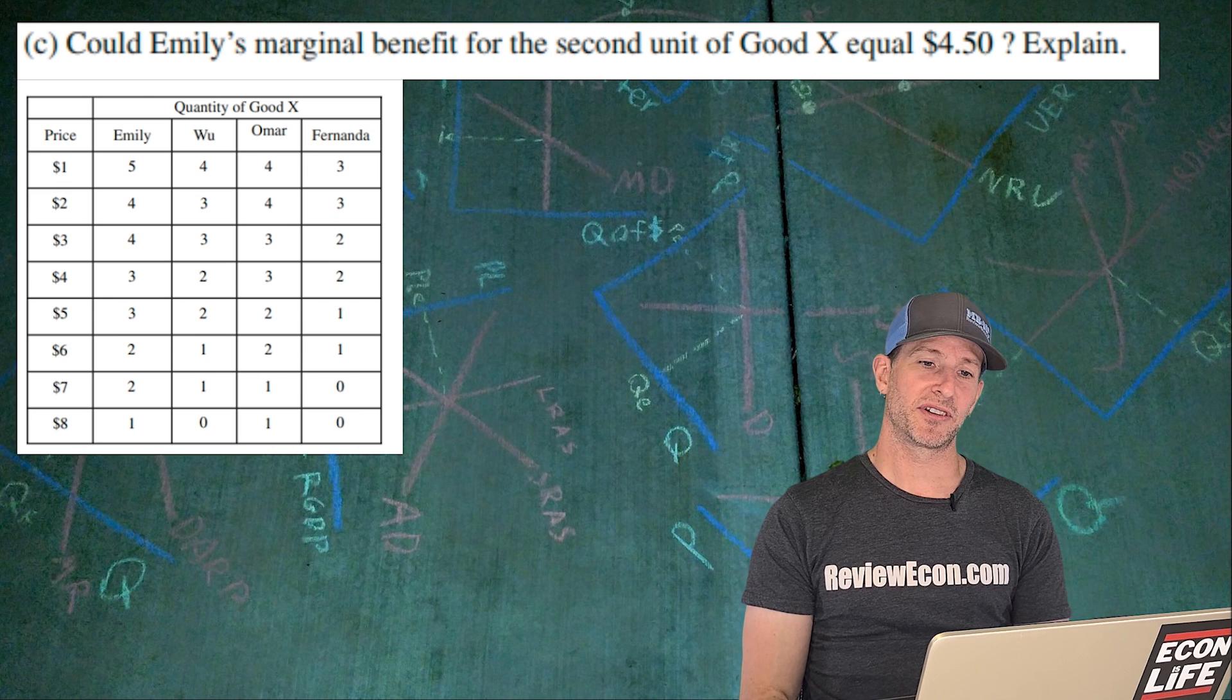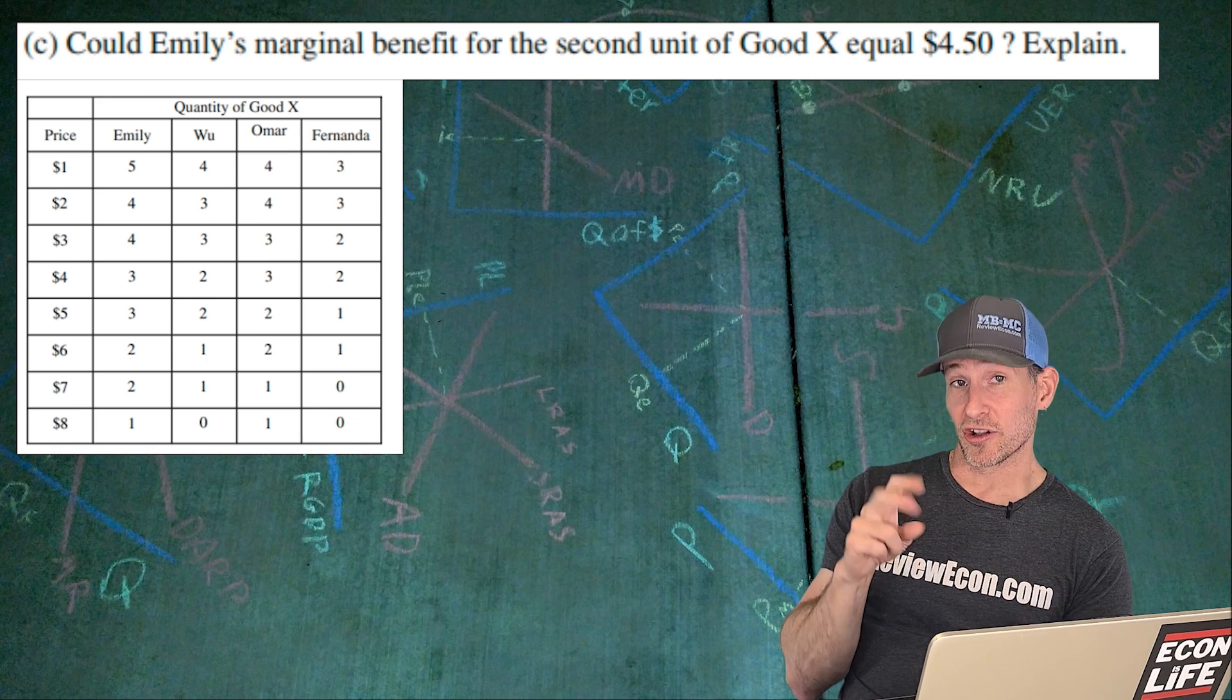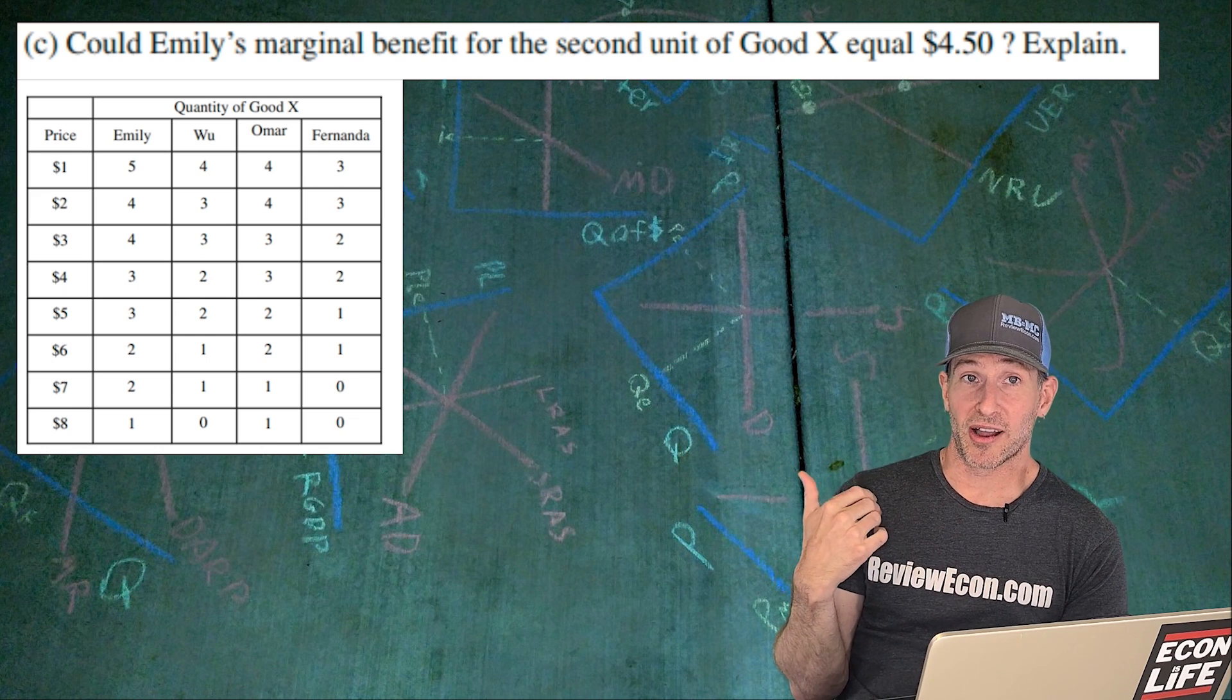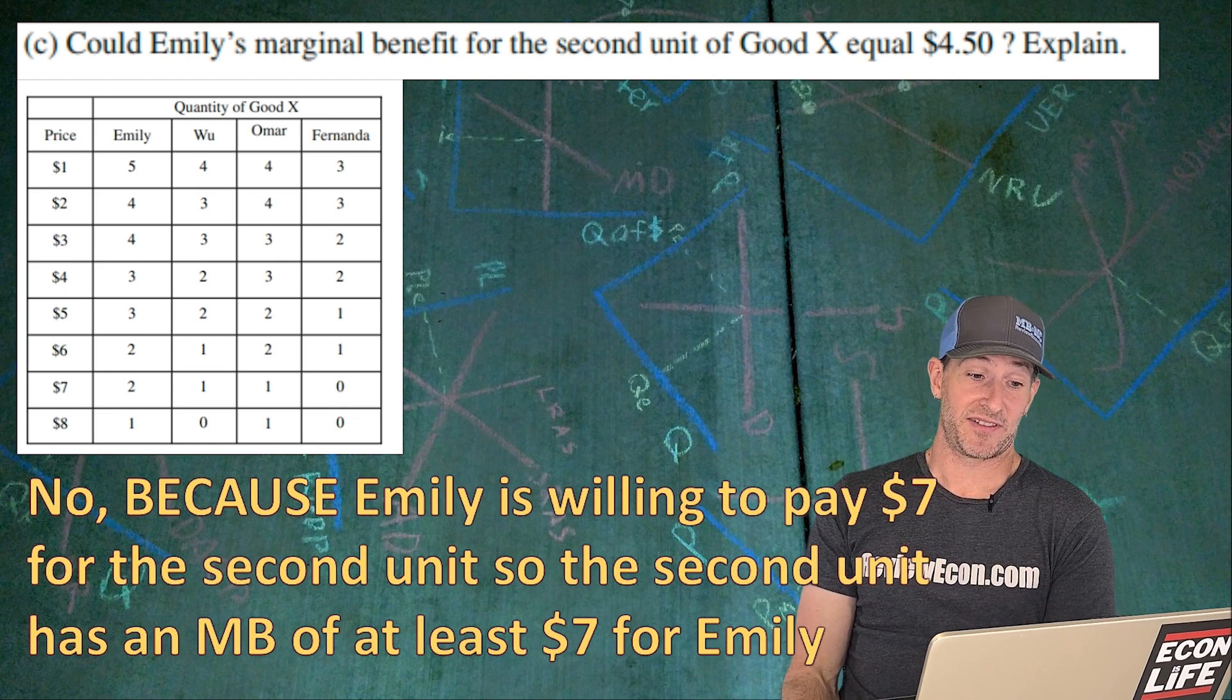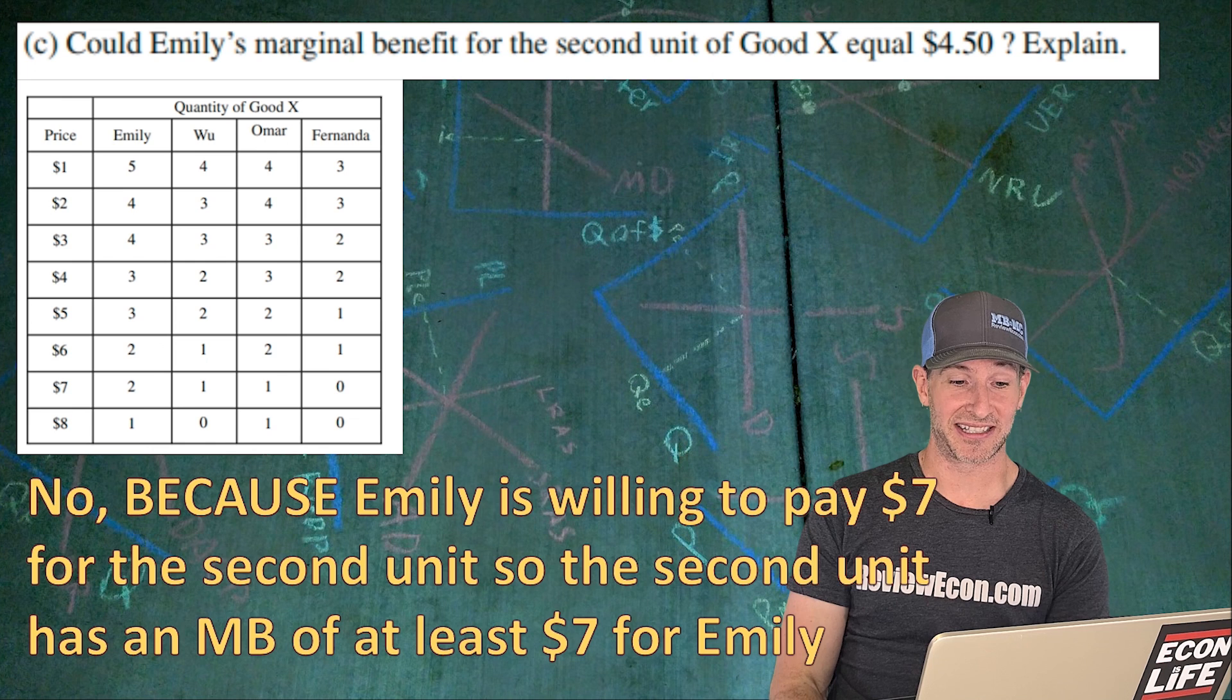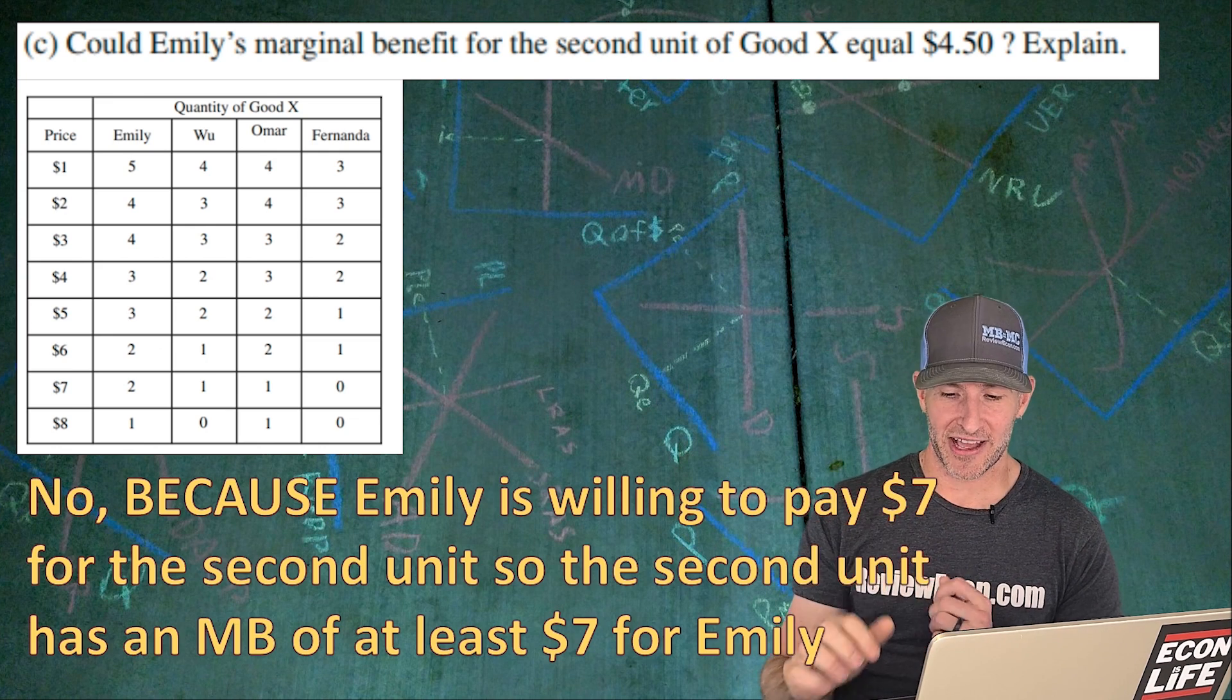On to C. Could Emily's marginal benefit for the second unit of good X equal $4.50? Explain. Well, if you look, Emily actually is willing to pay as much as $7 for two units of output. So that means that two units of output or that second unit is worth between $6 and $8 for her. Otherwise she wouldn't be willing to pay that much. So I put no because Emily is willing to pay $7 for the second unit, and she could actually be willing to pay as much as $7.99. We don't know exactly where her cutoff exactly is. So that means her marginal benefit of that second unit is at least $7. It's also less than $8, by the way. So there you go, that's my answer for that one.